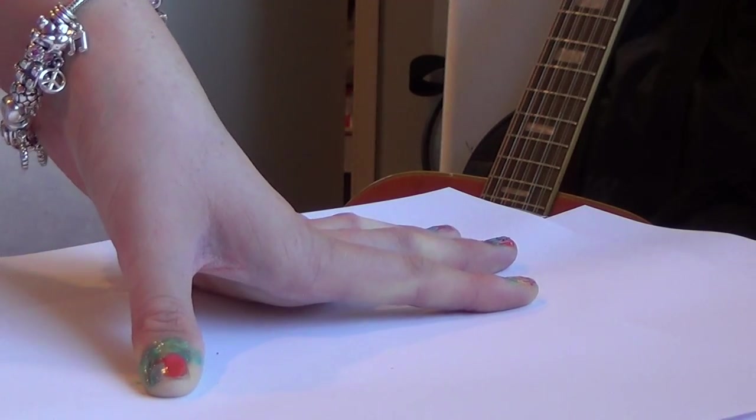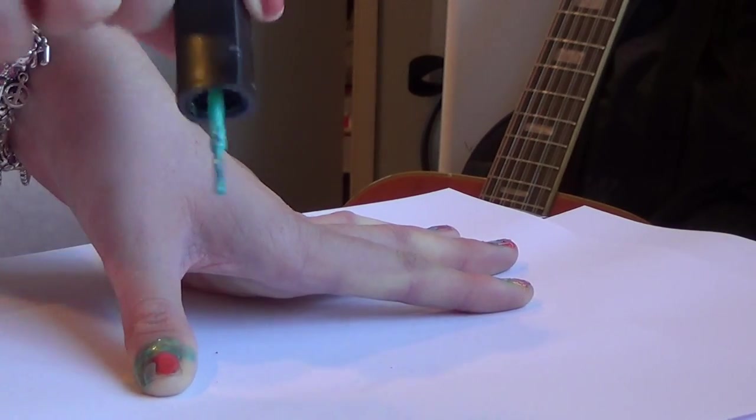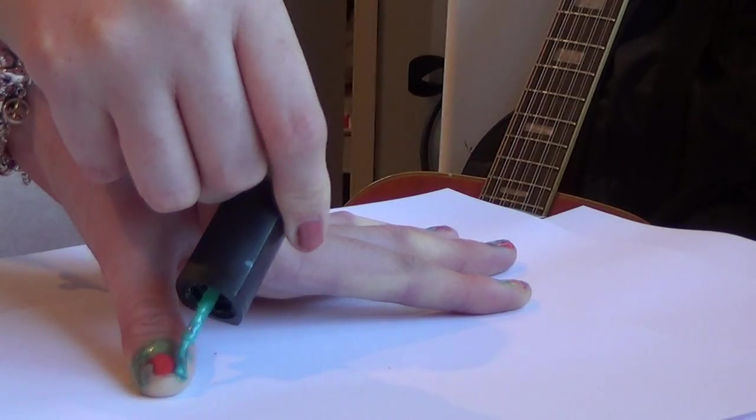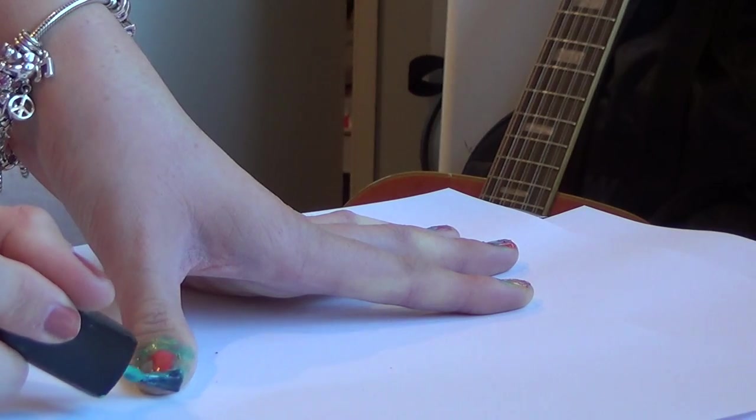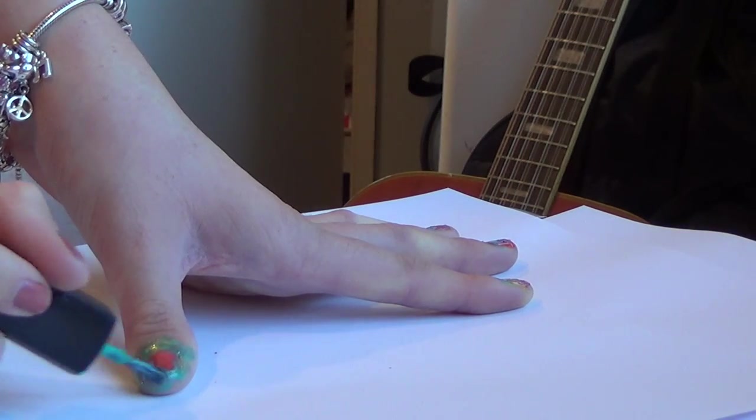And then you're just kind of going to do the same on the other side. And then around the bottom of your thumb. So it looks like this.